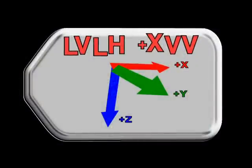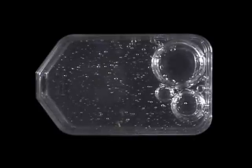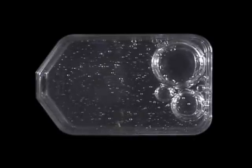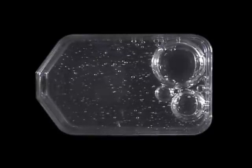Now look at local vertical local horizontal, which is an earth-oriented attitude, and now look at the resultant motion of the bubbles. They move horizontally and then they move diagonally toward the right-hand corner.